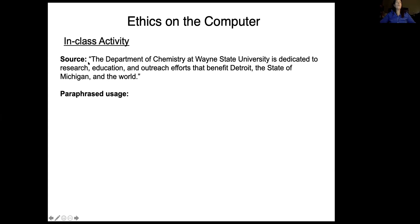I know we have a large class and it's online and I'll be honest, I've never done this before, but let's try to do a little exercise together. So I'm going to give you a few minutes. What we're going to do in these few minutes is I would like you to paraphrase this sentence, which I actually took from the chemistry department's website. So here's the quote. The Department of Chemistry at Wayne State University is dedicated to research, education and outreach efforts that benefit Detroit, the state of Michigan and the world. Now, I think this is actually a pretty difficult one to paraphrase, but I think that's why I wanted to do it together. So why don't you take a few minutes to try to paraphrase that and we'll come together as a class.